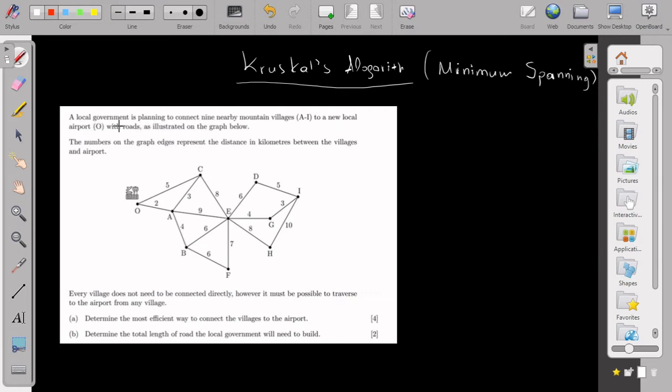It says a local government is planning to connect nine nearby mountain villages A to I to a new local airport, all with roads as illustrated on the graph below. The numbers on the graph edges represent the distance in kilometers between the villages and the airport.